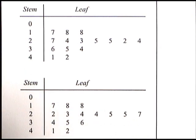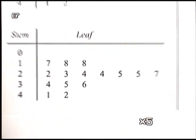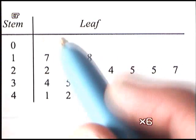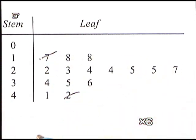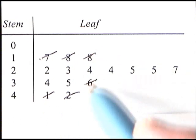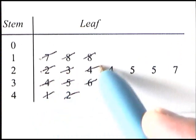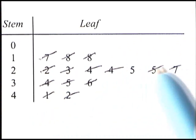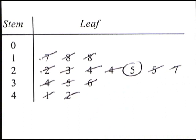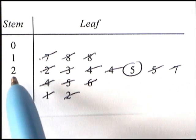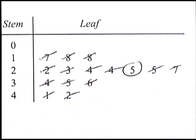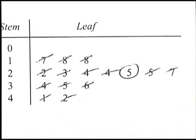An ordered stem and leaf diagram makes some things much easier. For example, to find the median — the value in the middle — you just cross off from the smallest and the biggest alternately until you reach the middle value. In this case, the median mark was 25.